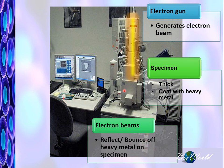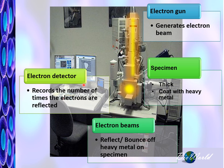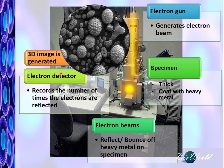So every time the electrons bounce off, the detector here will actually record the number of times the electrons are being reflected. And based on that, the computer program will generate a 3D image.